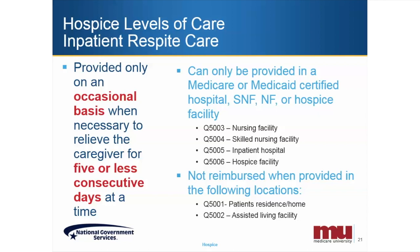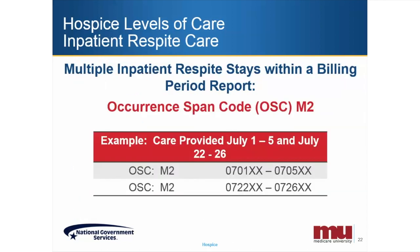CR-6778 provides instructions for claims with respite days, revenue code 0655. Because this level of care can only be provided outside of the patient's home, the CR states that claims will be RTP'd if site of service codes Q5001 or Q5002 are reported, as the patient's home or an assisted living facility are not appropriate settings. Inpatient respite care can only be provided in a Medicare or Medicaid participating hospital, SNF, hospice facility, or NF. These codes include Q5003 (nursing facility), Q5004 (skilled nursing facility), Q5005 (inpatient hospital), and Q5006 (hospice facility).